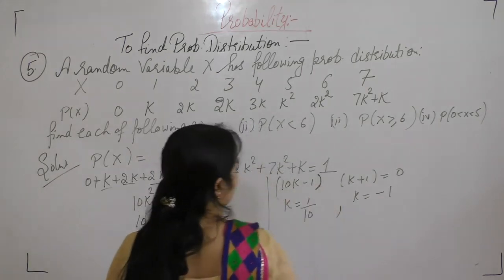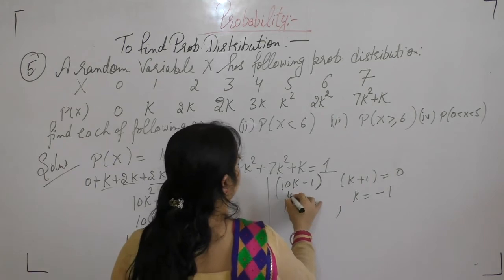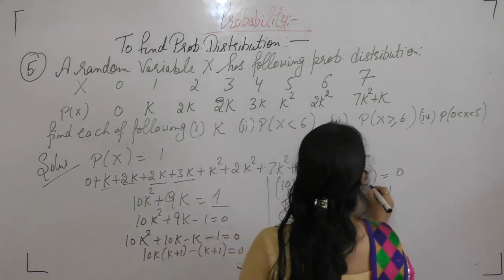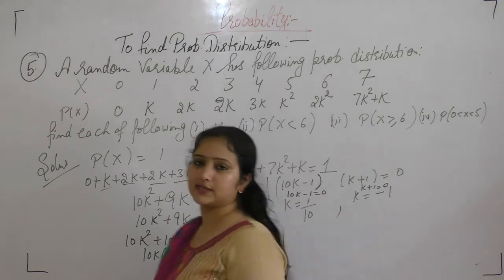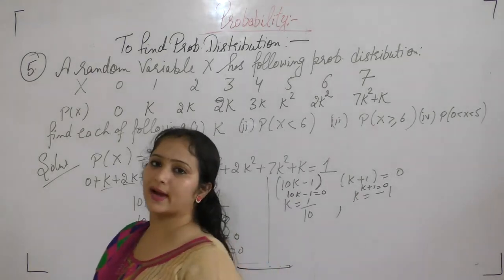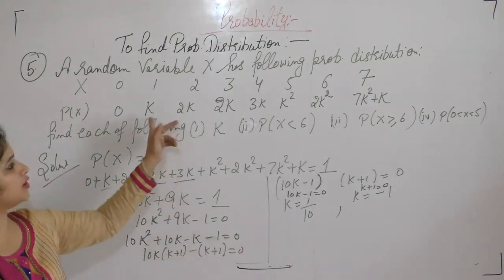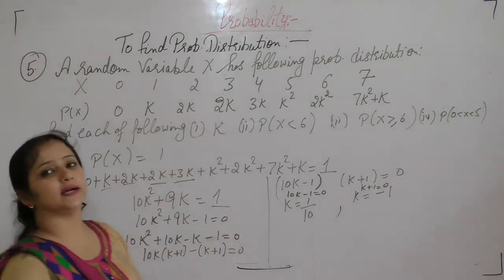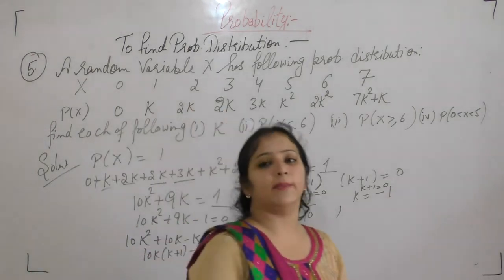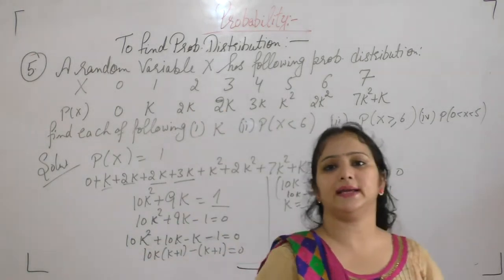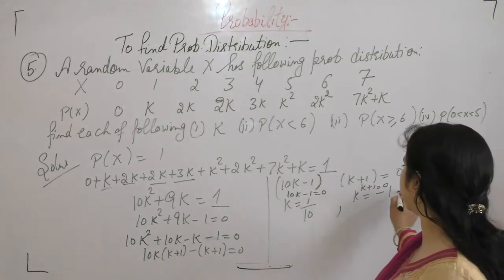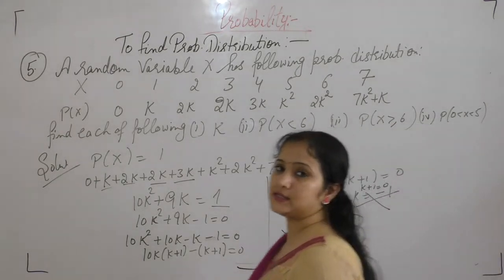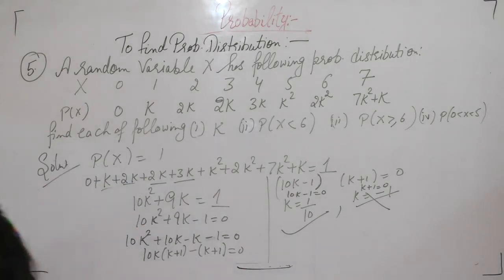10k minus 1, k plus 1 is 0. After that, put these values equal to 0. When k plus 1 is 0, k is minus 1. When we put the value of k as negative, all the terms will become negative, but probability cannot be negative, so this term will be rejected. So the value of k is 1 by 10.